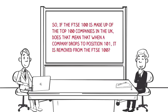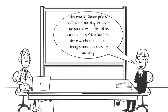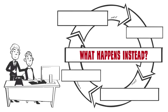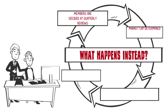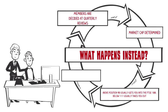So if the FTSE 100 is made up of the top 100 companies in the UK, does that mean that when a company drops to position 101 it is removed? Not exactly. Share prices fluctuate from day to day, and if companies were ejected as soon as they fell below 100 there would be constant changes and unnecessary volatility. Instead, members are decided at quarterly reviews. Above position 90 usually gets you into the FTSE 100, and below 111 usually takes you out. Dropouts usually move into the FTSE 250.